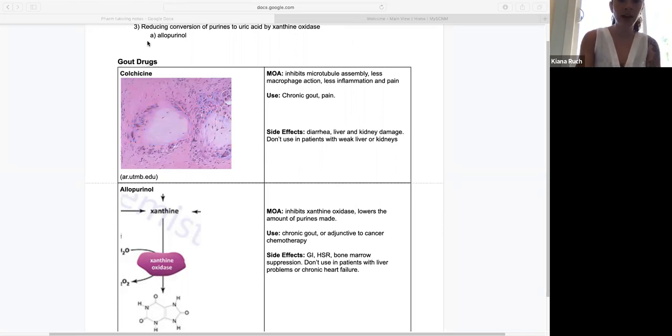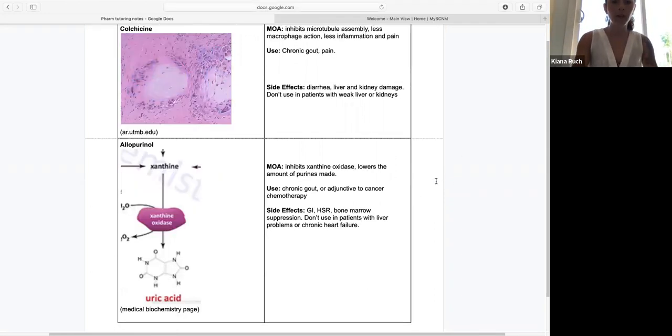The next drug we're going to talk about is allopurinol. This is a good one to know. This works by inhibiting an enzyme called xanthine oxidase. Xanthine oxidase takes xanthine, which is a breakdown product of purine metabolism, and converts it into uric acid. Allopurinol stops that conversion.